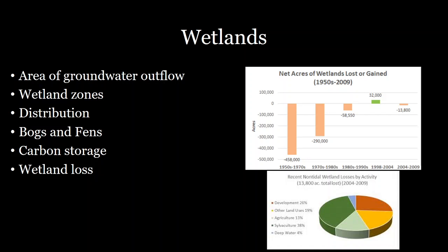That being said, with sea level rise, a lot of wetlands cannot adapt quickly enough. The wetlands can actually drown because they don't build up fast enough compared to how fast sea level is rising. So it's likely that we will still see some significant losses of wetlands in the future.